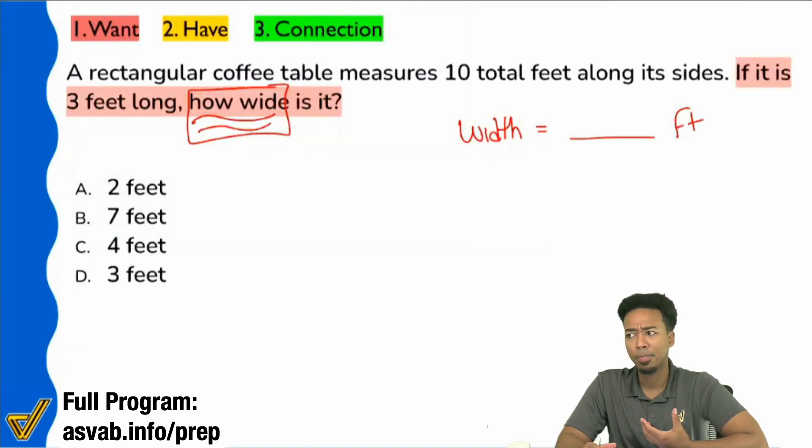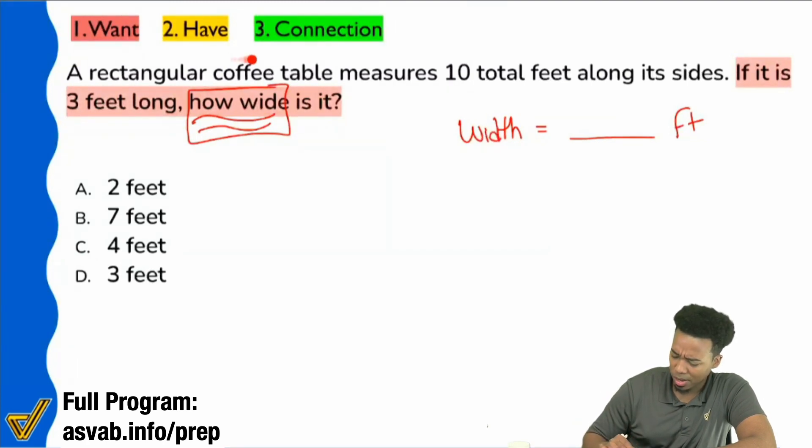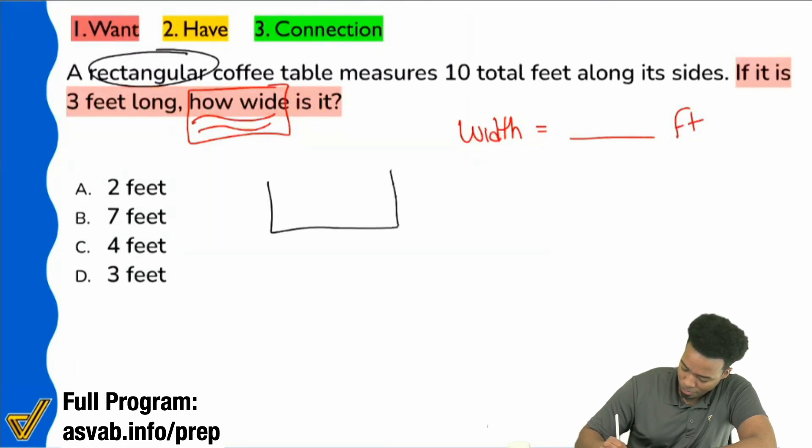We're looking for the width of something. Everybody, when you're talking about lengths and widths, is it possible that there might be a shape involved? Is that possible? Yeah, very possible. Very possible that there's a shape included. So with that said, let's go ahead and read through here just to see what's going on. A rectangular coffee table measures 10 total feet along its sides. What's the shape here, everybody? All right, we're talking about a rectangle. So let's go ahead and just circle that right there. We had a rectangle.